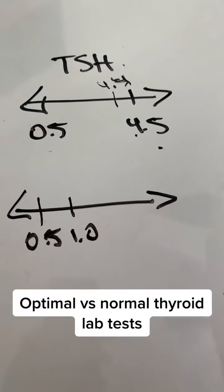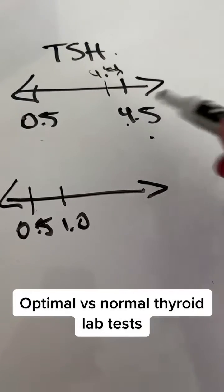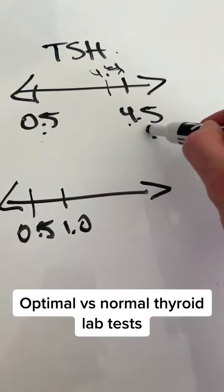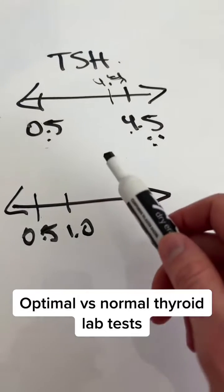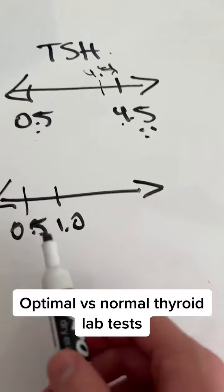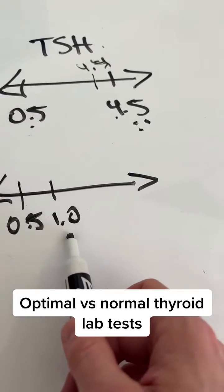Optimal thyroid lab tests are a little bit different. What we're doing is we're saying, hey, within this range of 0.5 to 4.5, this is the normal range. There must be an optimal range in which thyroid patients live who are healthy. And the range for this is usually between 0.5 and 1.0.